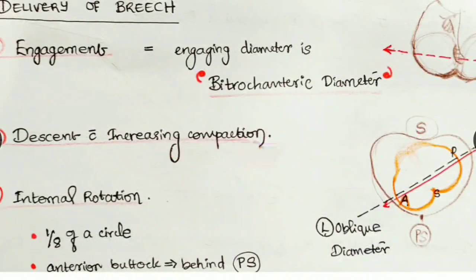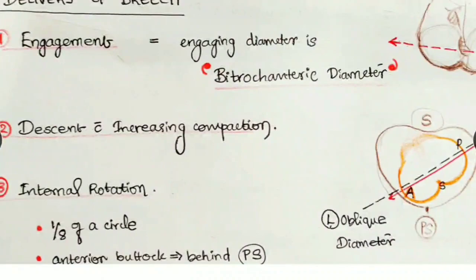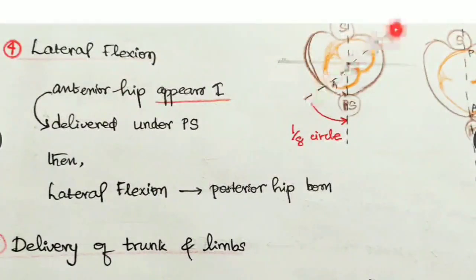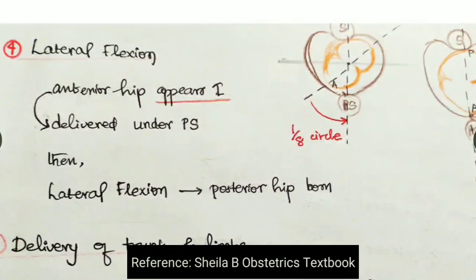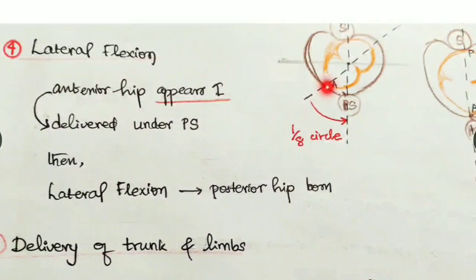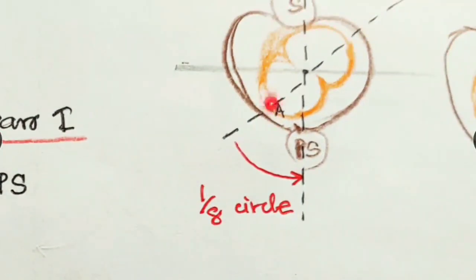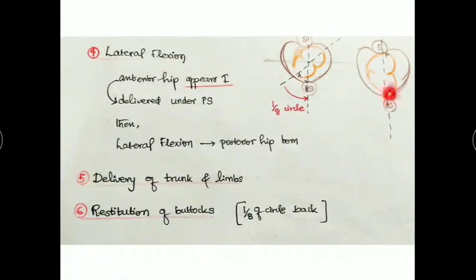Next is descent with increasing compaction. Next is internal rotation - same as before, one-eighth of the circle. The long axis has to align in the AP diameter so it can pass out of the maternal pelvis. It rotates one-eighth of the circle so the anterior buttock lies just beneath the pubic symphysis.